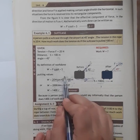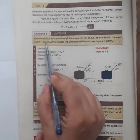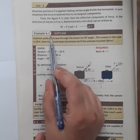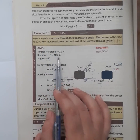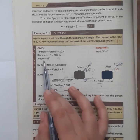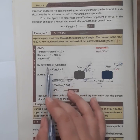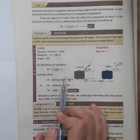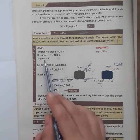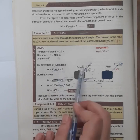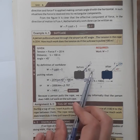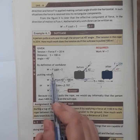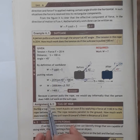In the first video, we covered example 6.1, in which we had force, distance, angle, and we found the work done. The force was in a different direction from the displacement, which is why we used the formula F cos theta multiplied by distance.